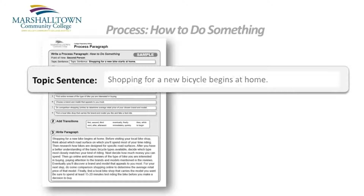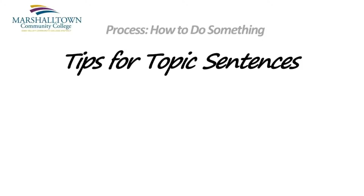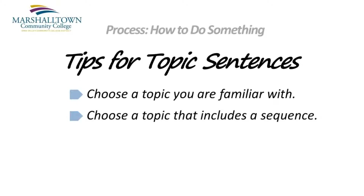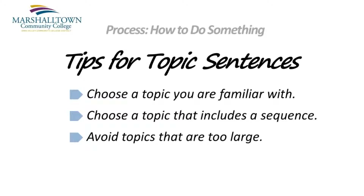The first step in writing your process paragraph is to decide on a topic and then write a topic sentence. Here are a few tips to help you get started. First, choose a topic that you are familiar with — obviously, this will make the assignment easier to complete. Be sure to choose a topic that includes a sequence. If your topic doesn't show your reader how to do something or how something works, then it's not really a process analysis. Finally, avoid topics that are too large to cover in one paragraph. It's important that you choose something that can be explained in 8 to 10 sentences.